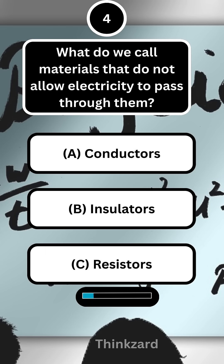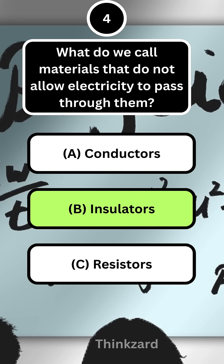Next question: what do we call materials that do not allow electricity to pass through them? Answer: B, insulators.